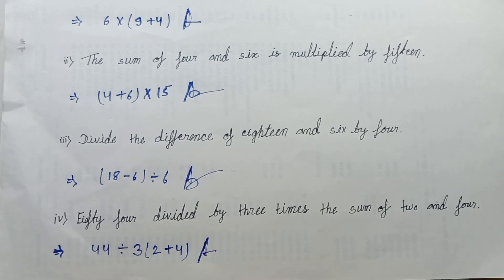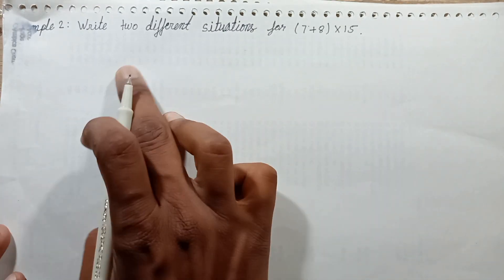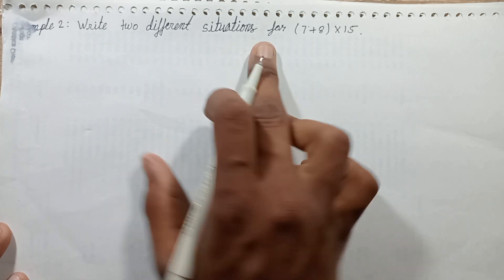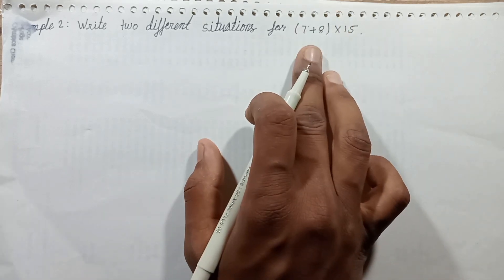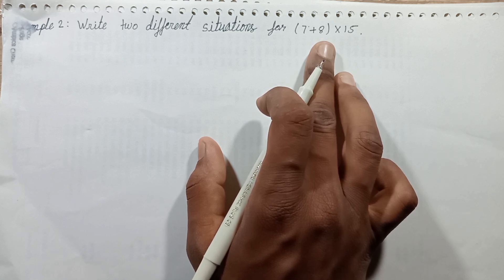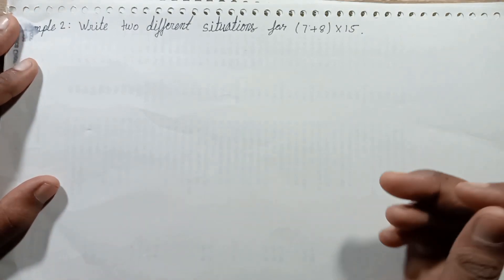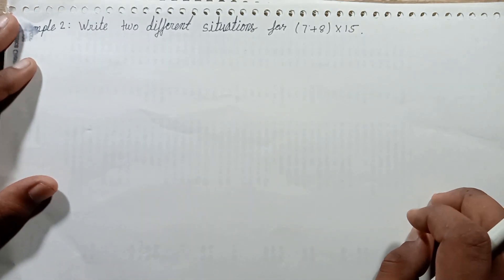Let's solve in the next episode. Example number 2: write two different situations for 7 plus 8 parenthesis multiplied by 15. This statement will be solved in the next episode. Wait for the next upcoming notification on your phone. See you soon.